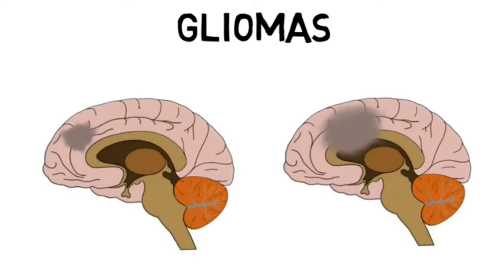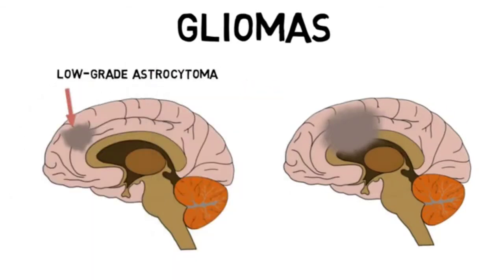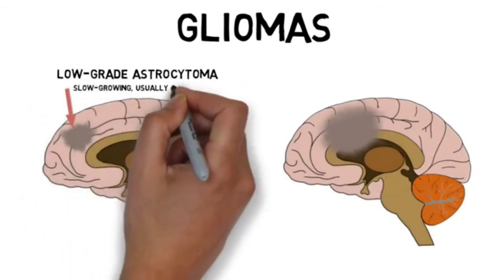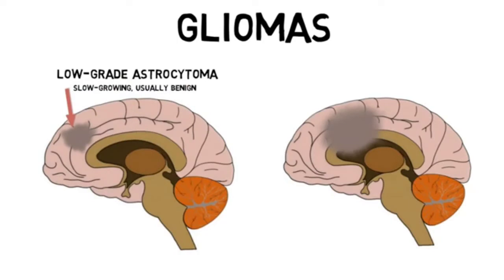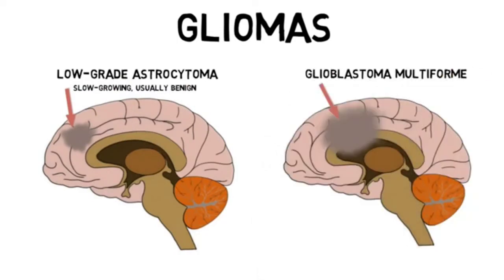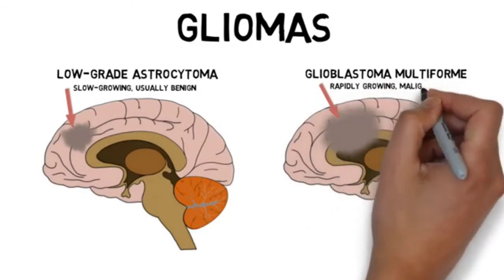One example of an astrocytoma is low-grade astrocytoma, which indicates a slow-growing tumor that is usually benign. Another example, however, is glioblastoma multiforme, which is a highly malignant tumor that grows rapidly and spreads.